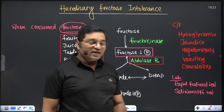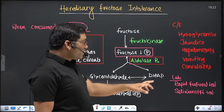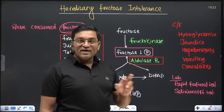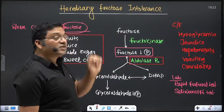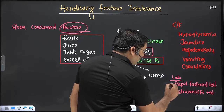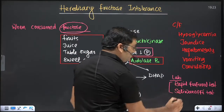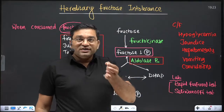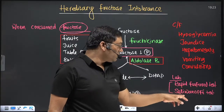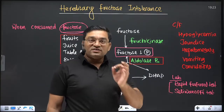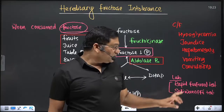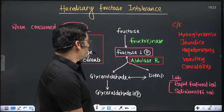The symptoms are nearly the same as galactosemia, but there is no congenital cataract. Lab diagnosis of hereditary fructose intolerance is done using the rapid furfural test and Seliwanoff's test. These tests detect fructose in the urine and are based on the keto group.